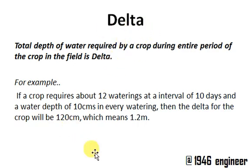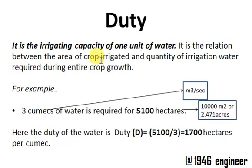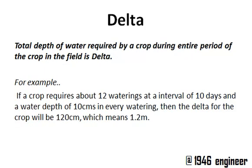Delta of that crop. So let's revise: duty means what is the area that can be irrigated with one unit of water — that is duty. And what is the total quantity of water required by a crop — that is known as delta.